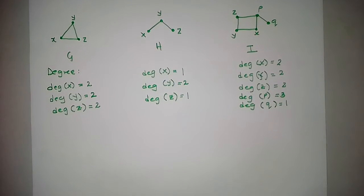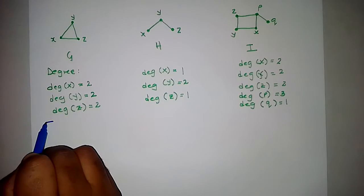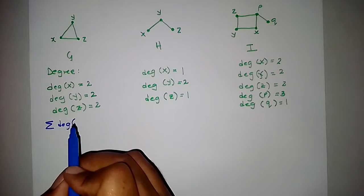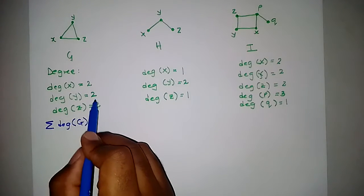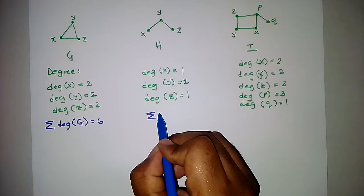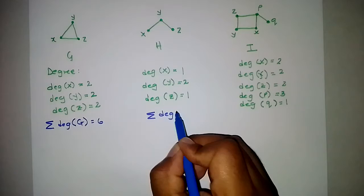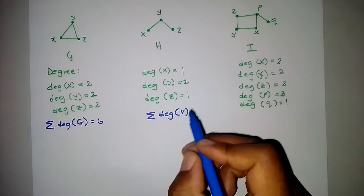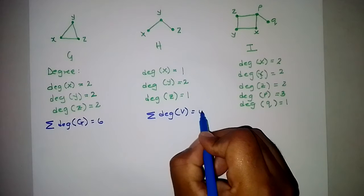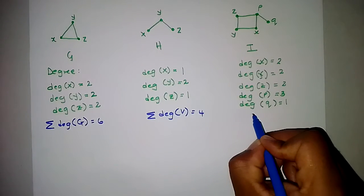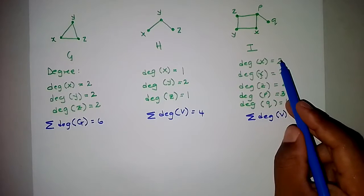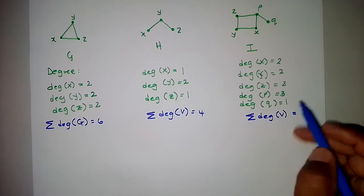Now, in order to appreciate the first theorem of graph theory, let us sum the degrees of all the vertices of Graph G: 2 plus 2 plus 2 equals 6. For Graph H: 1 plus 2 plus 1 equals 4. And for Graph I: 2 plus 2 plus 2 plus 3 plus 1 equals 10.